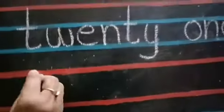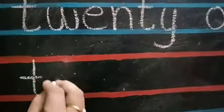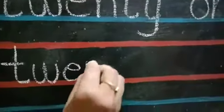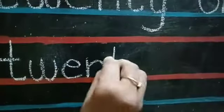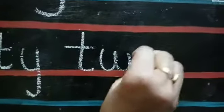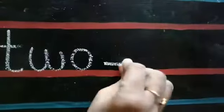After 21 comes 22. T-W-E-N-T-Y for 20. Dash 2. T-W-O for 2. Two, twenty-two.